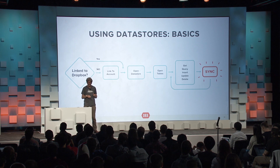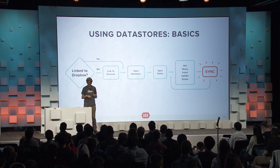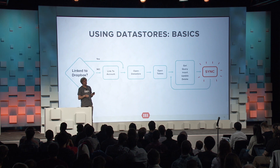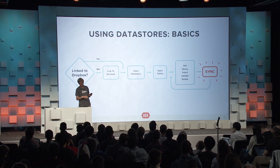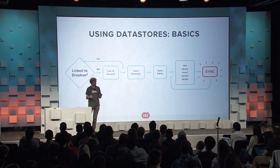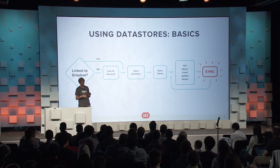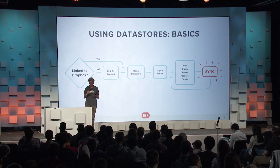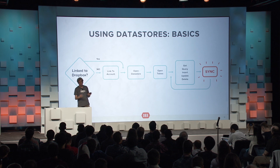In order to use the Datastore, there's a simple sequence of steps. The very first time your app launches for a particular user, that user has to link the application with their Dropbox account. After the first time, they never have to think about that again because the client library stores the access token. What you do have to do every time is open your Datastore — you can open multiple Datastores — and we provide an API for opening the default Datastore for this app and user. Once you have your Datastore open, there are method calls to open various tables.